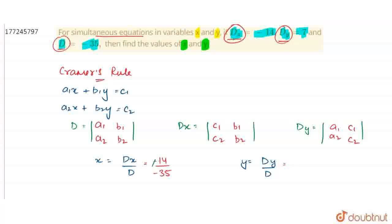So minus cancels and 7 cancels. This will become 5 and this will become 2. So x value is 2 upon 5. Here dy value given is 7 upon d minus 35. So cancel here, 5 will remain. So y value is minus 1 upon 5. Our answer is 2 upon 5 and minus 1 upon 5.